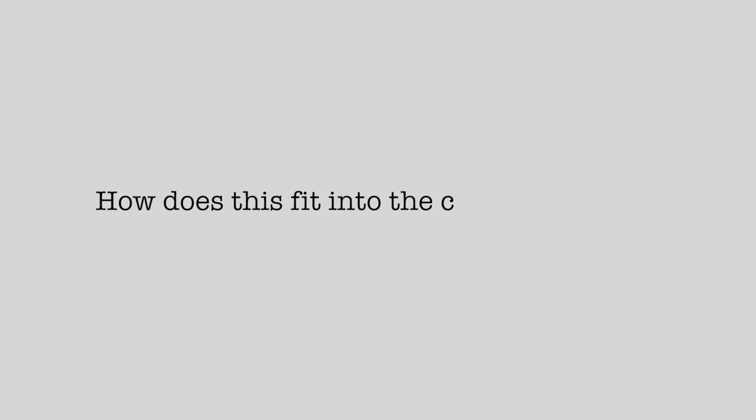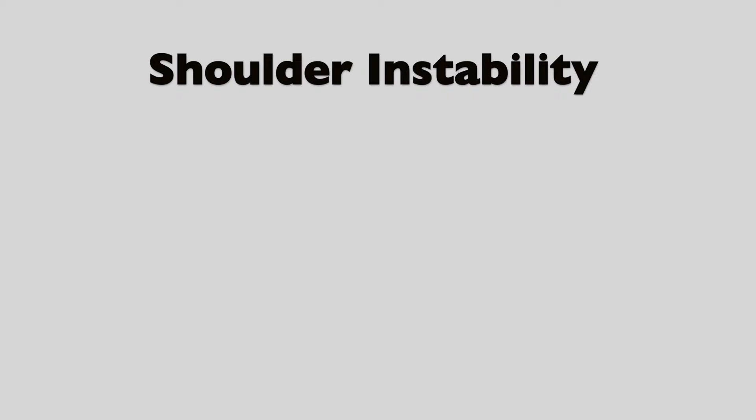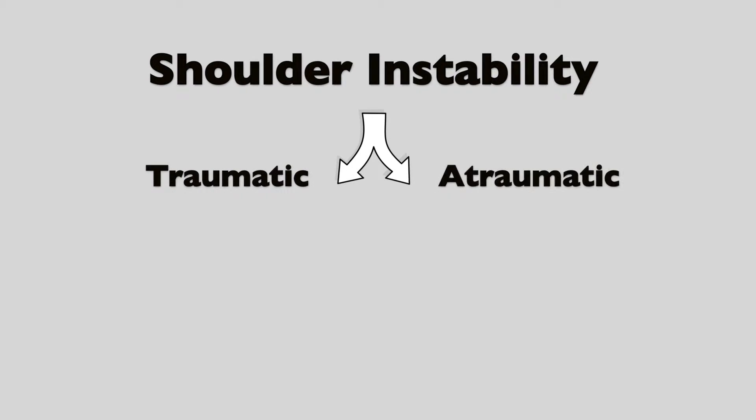So how does it fit into the clinical picture? Patients can present with either traumatic or atraumatic shoulder instability. These two broad groups have typical associating features, which we can remember by using the acronyms TUBS and AMBRI.